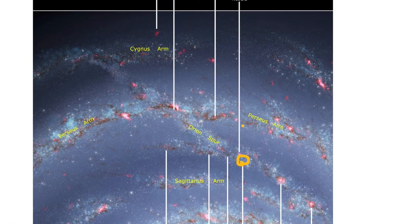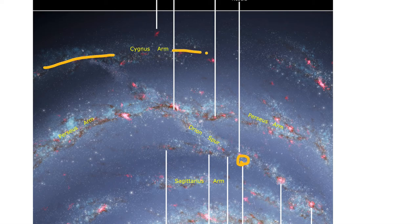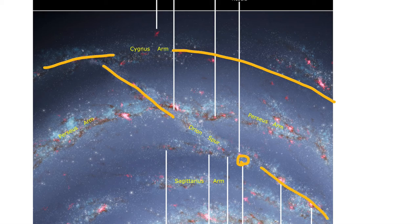When we zoom in we can see two distinct minor arms. We see this Cygnus arm which is a minor arm and we see this Orion arm, otherwise known as the Orion Spur. This Orion Spur contains the solar system.